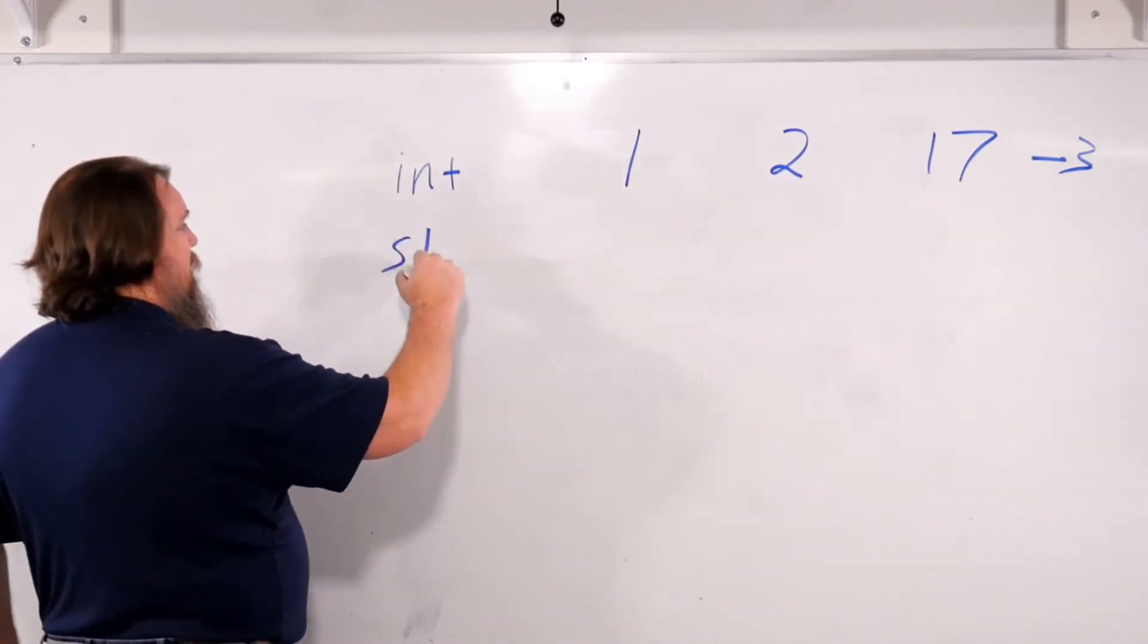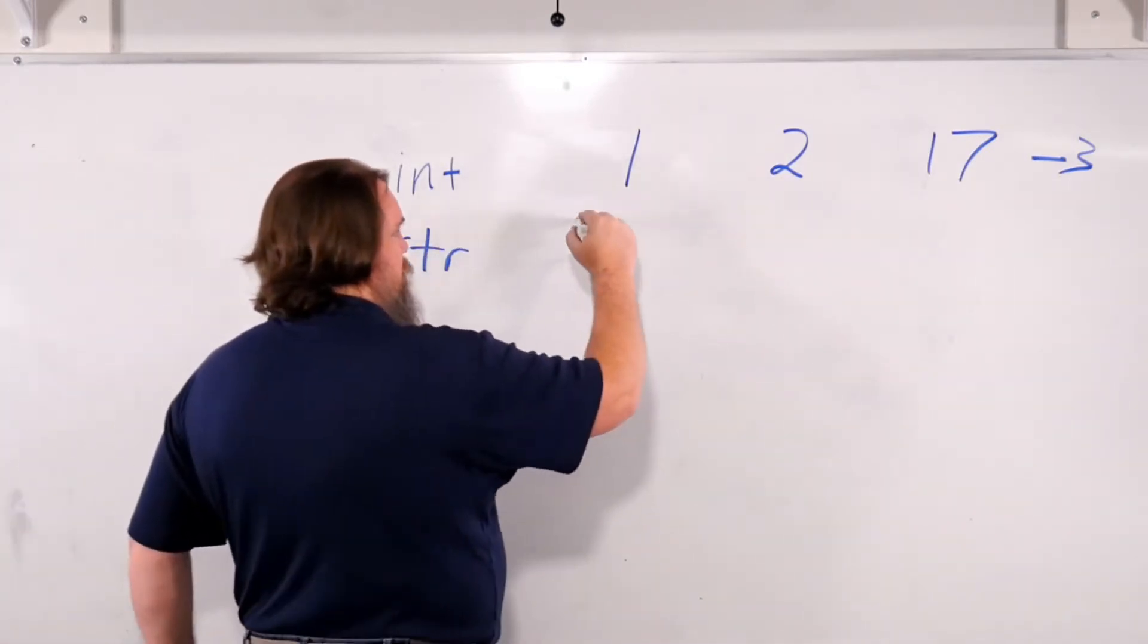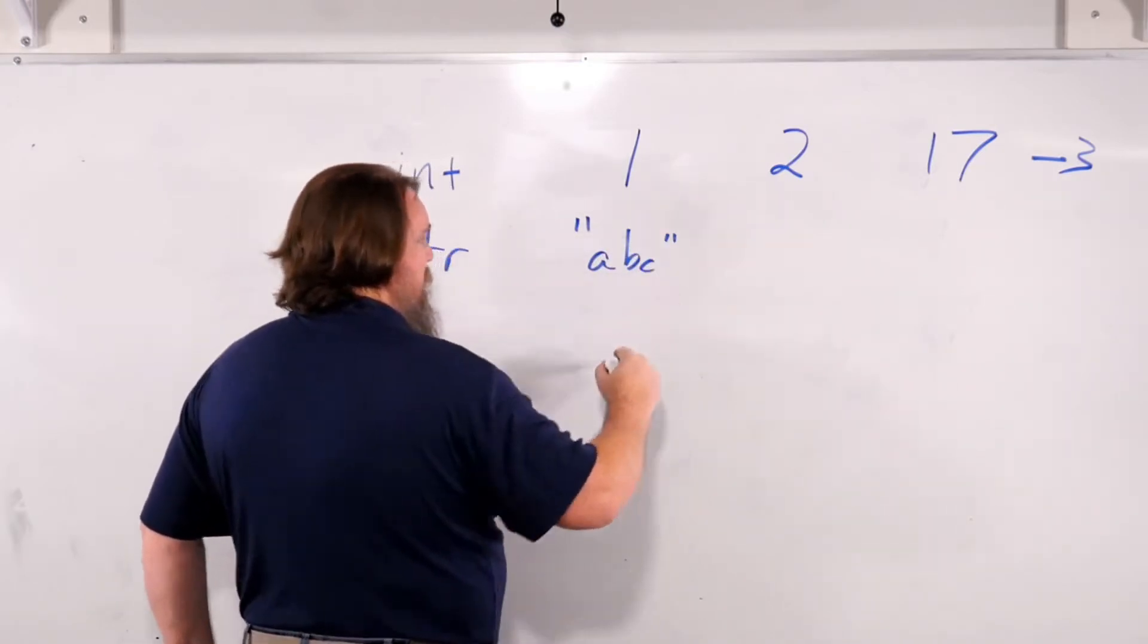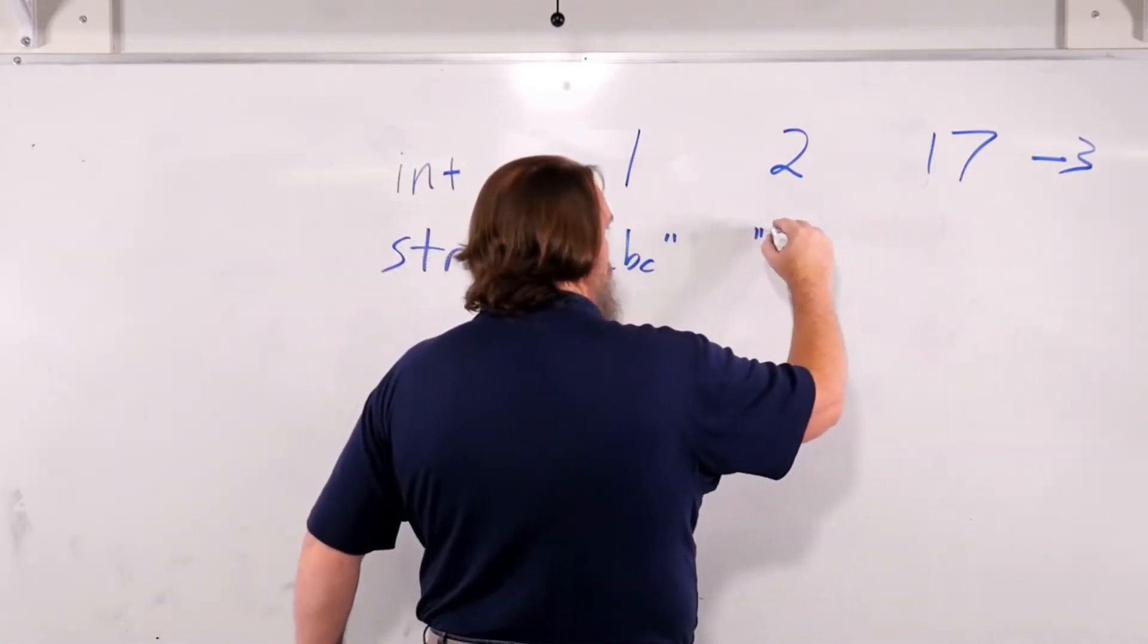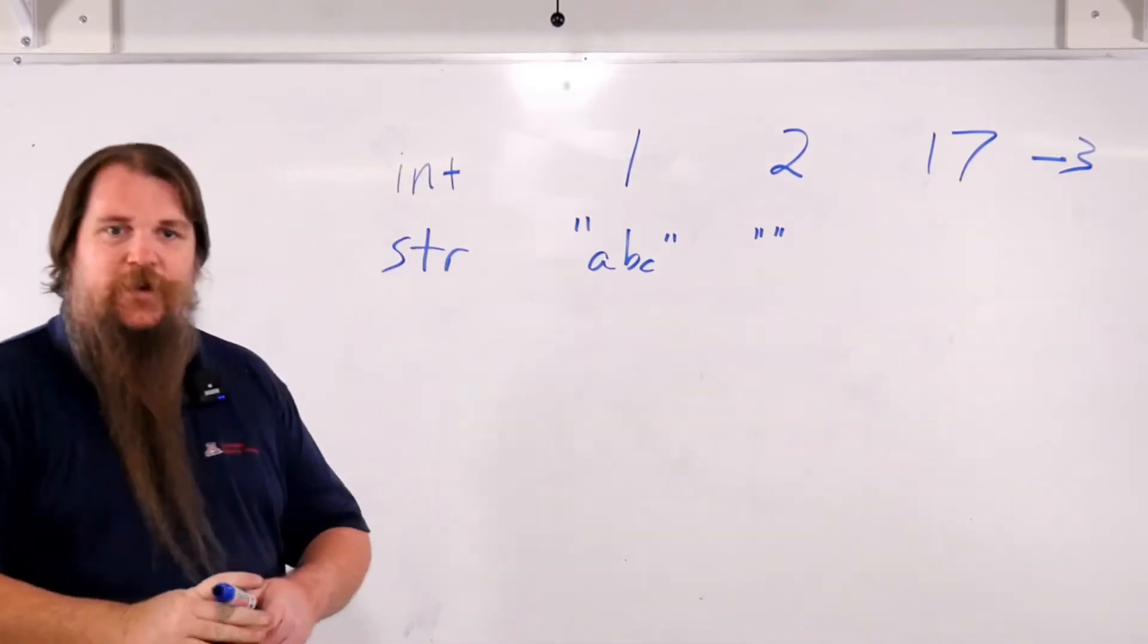They have strings. So strings are things like ABC or the empty string. That's a string of length 0.